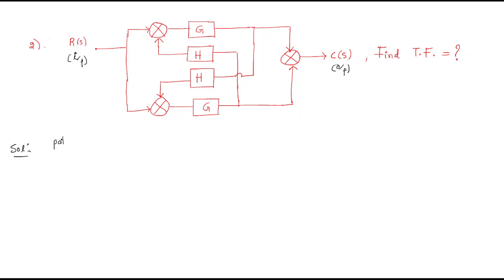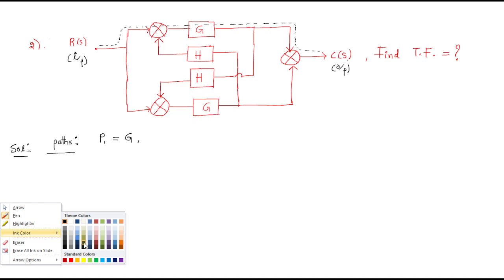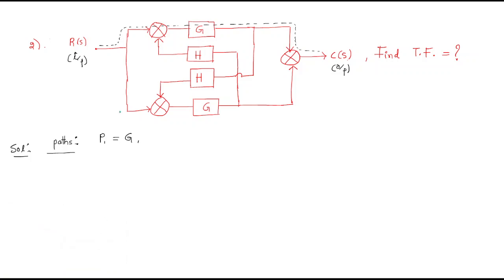For any problem, first recognize how many forward paths are available. Taking the first path: forward path 1 has gain G — that is the only gain. Taking forward path 2: this path also has gain G only.